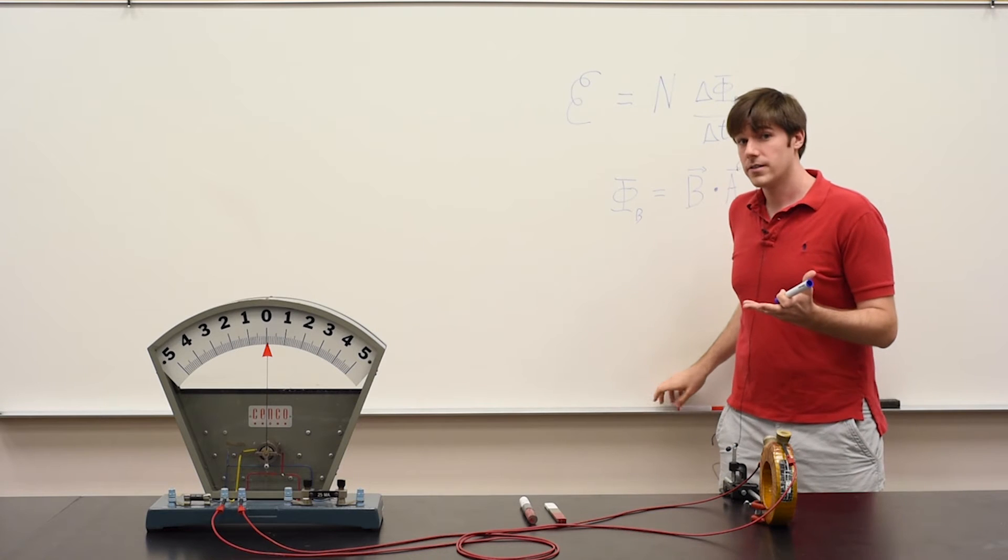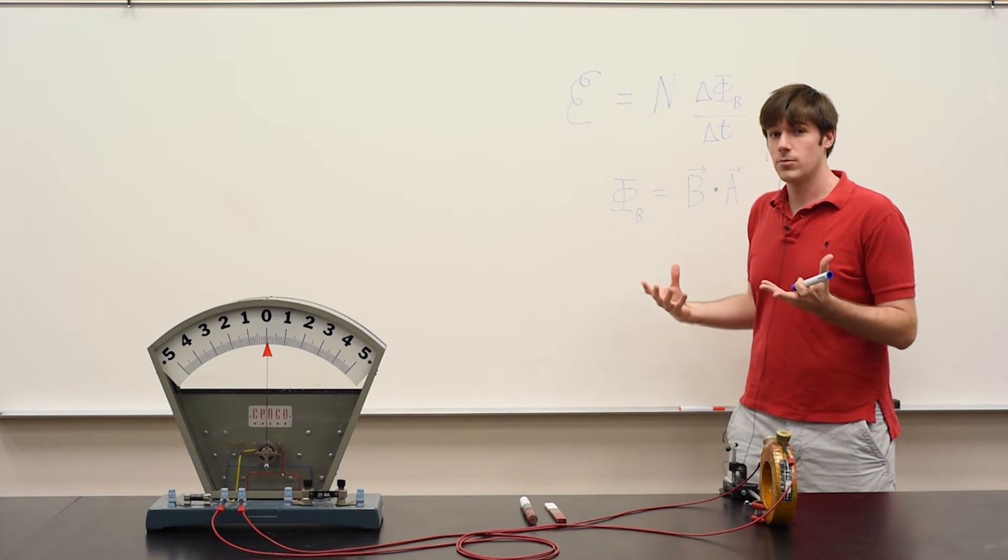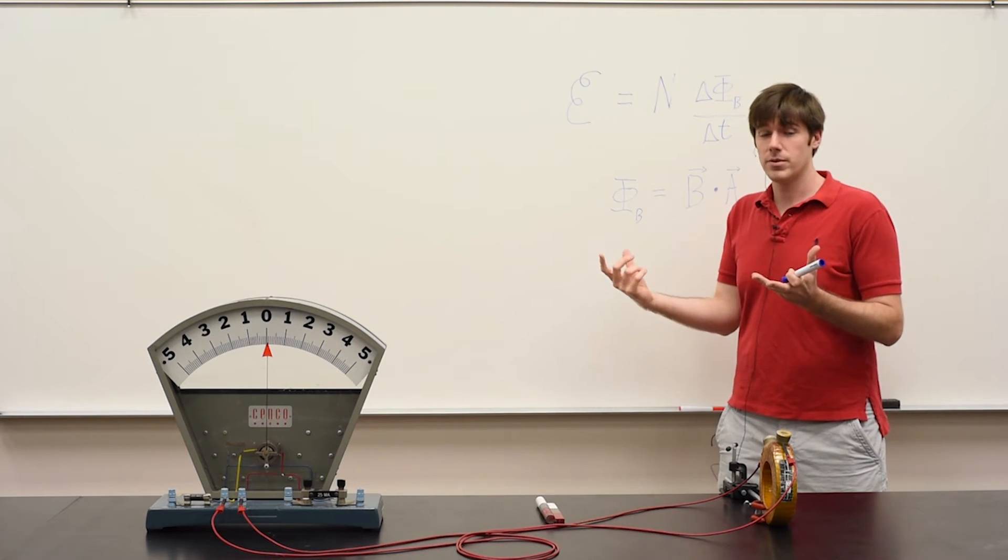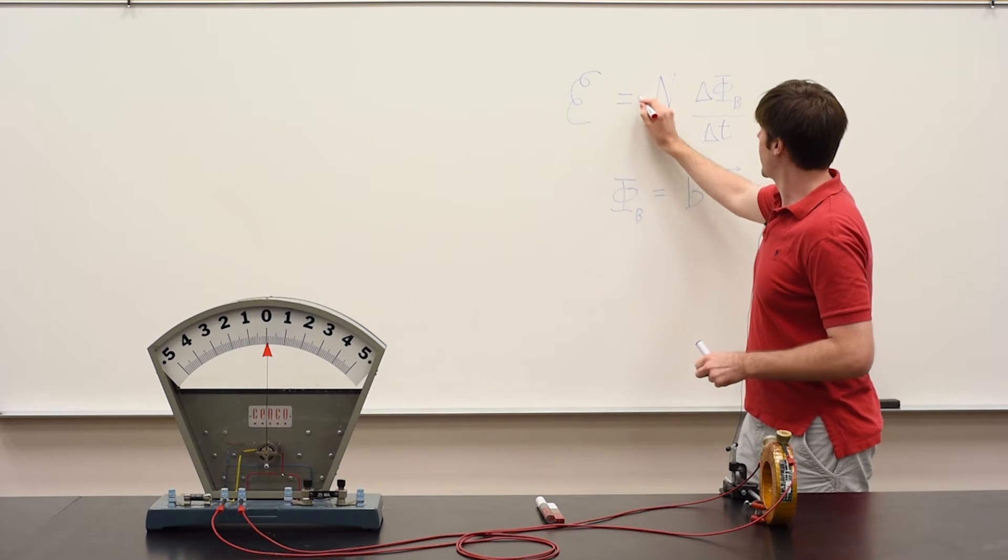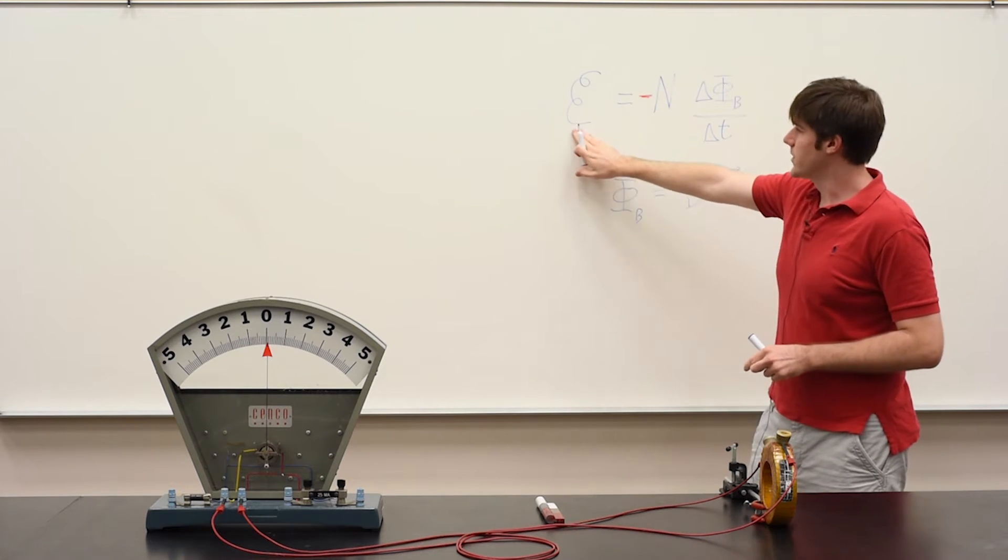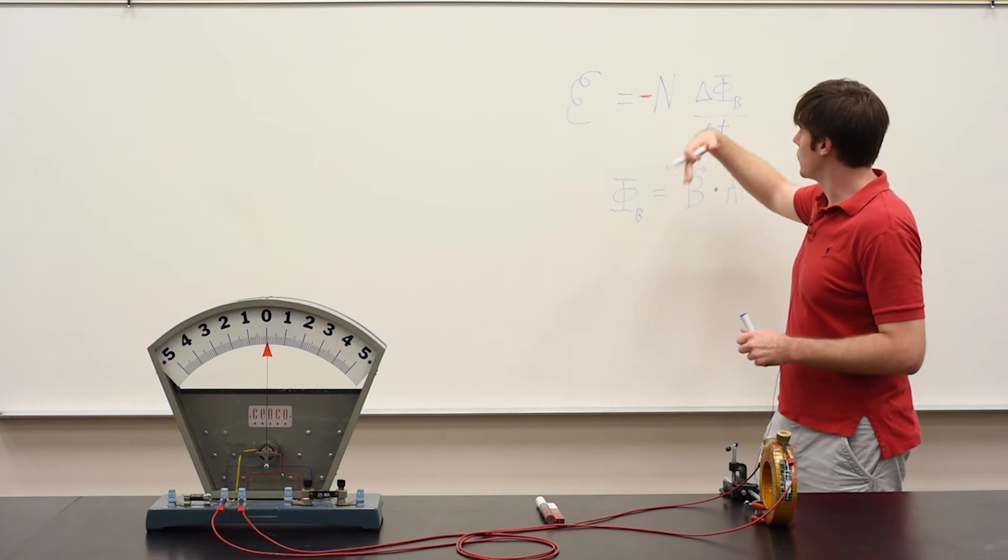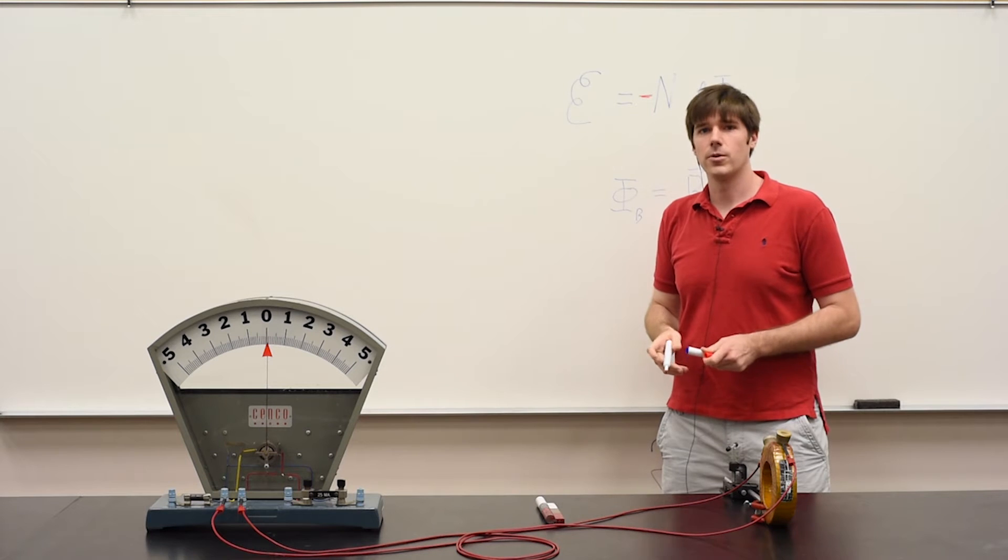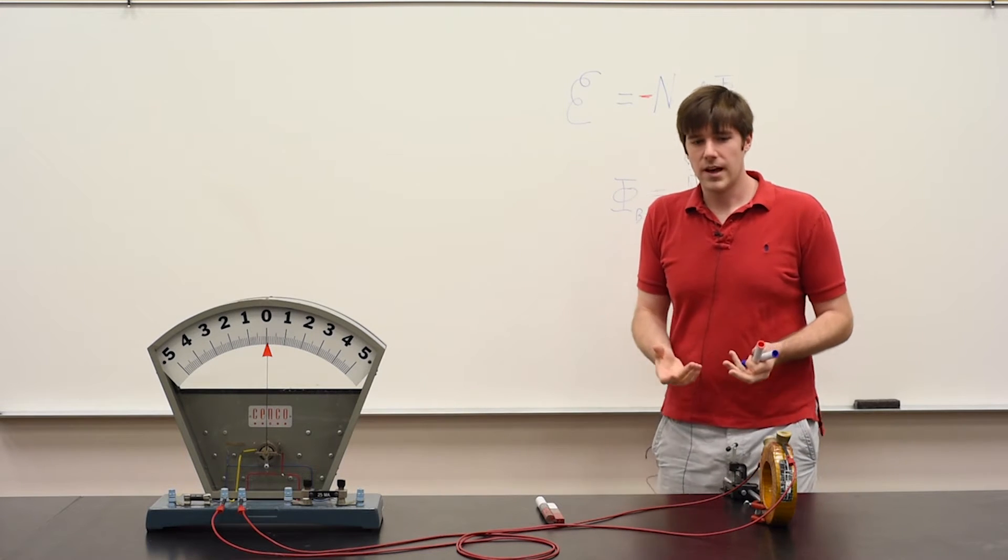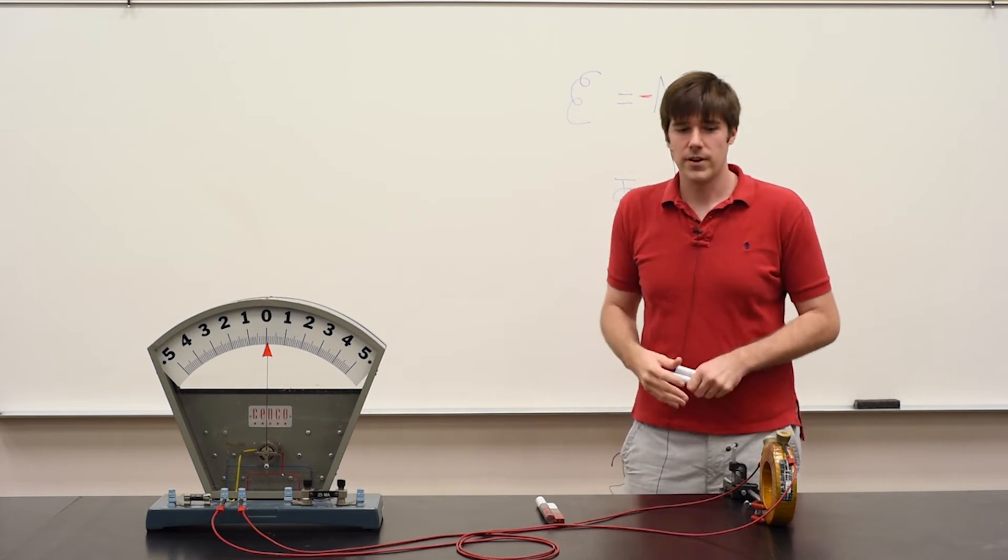Lenz's law tells us the direction in which this EMF voltage is set up when a magnetic field is applied. It states that a voltage is set up to oppose the change of magnetic flux through a set of coils. So we'll see how that's applied in this demonstration.